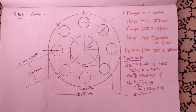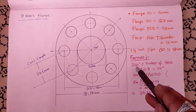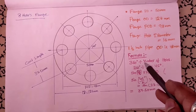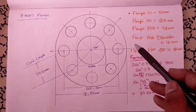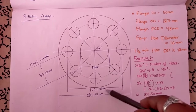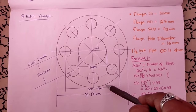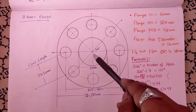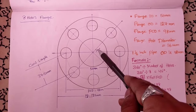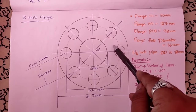The formula starts with 360 degrees divided by the number of holes. Since the full flange is 360 degrees, when we divide it by 8 holes we get 45 degrees for each angle.